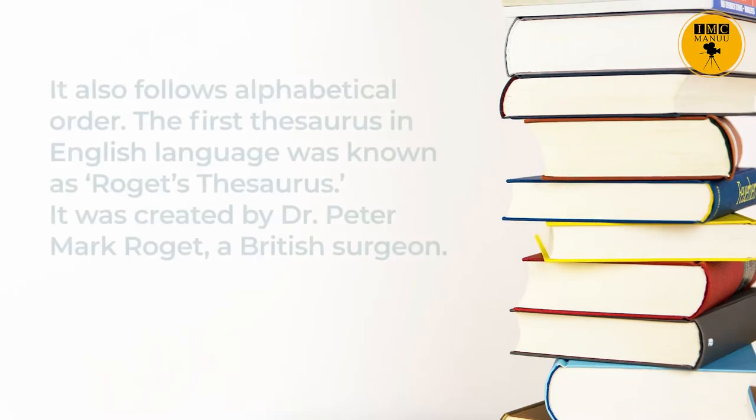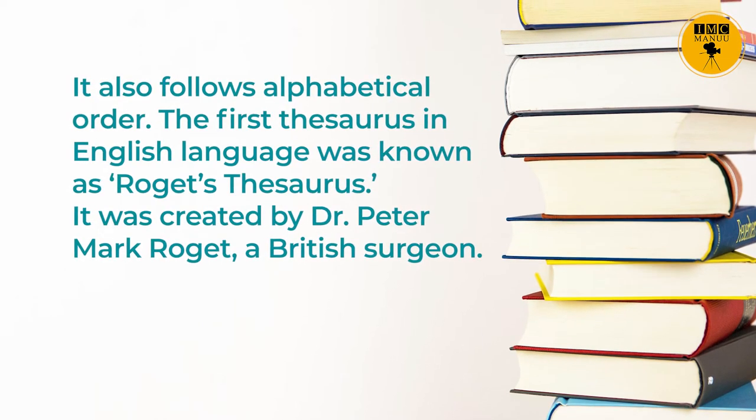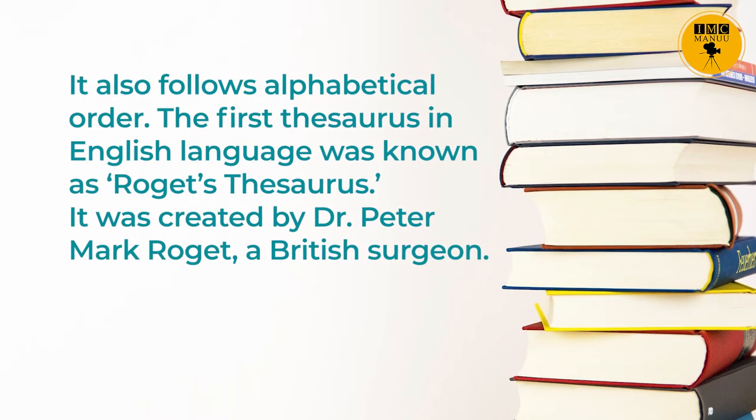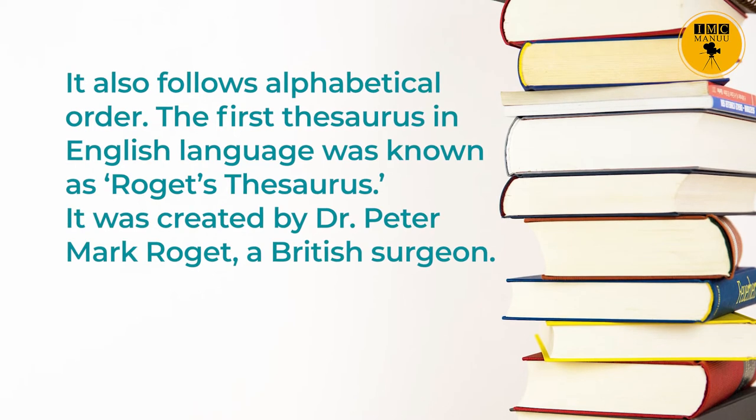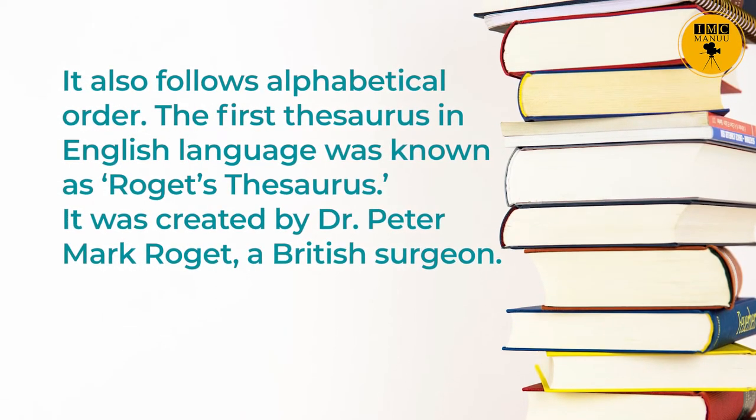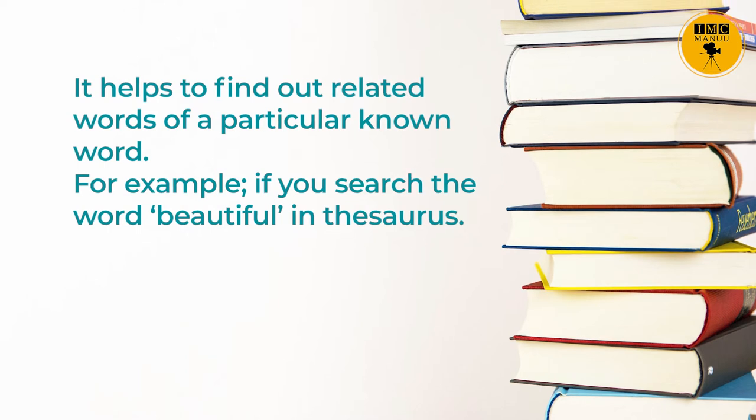Thesaurus is also a reference book. It contains a stock of words — synonyms and antonyms. It helps to find out words related to a core concept but with different shades of meaning. It is structured around ideas and also follows alphabetical order. The first thesaurus in English was known as Roget's Thesaurus, created by Dr. Peter Mark Roget, a British surgeon. A thesaurus and a dictionary are complementary to each other, but thesaurus is different from dictionary — it does not give meaning, definitions or usage of words like a dictionary. It helps to find out related words of a particular known word.